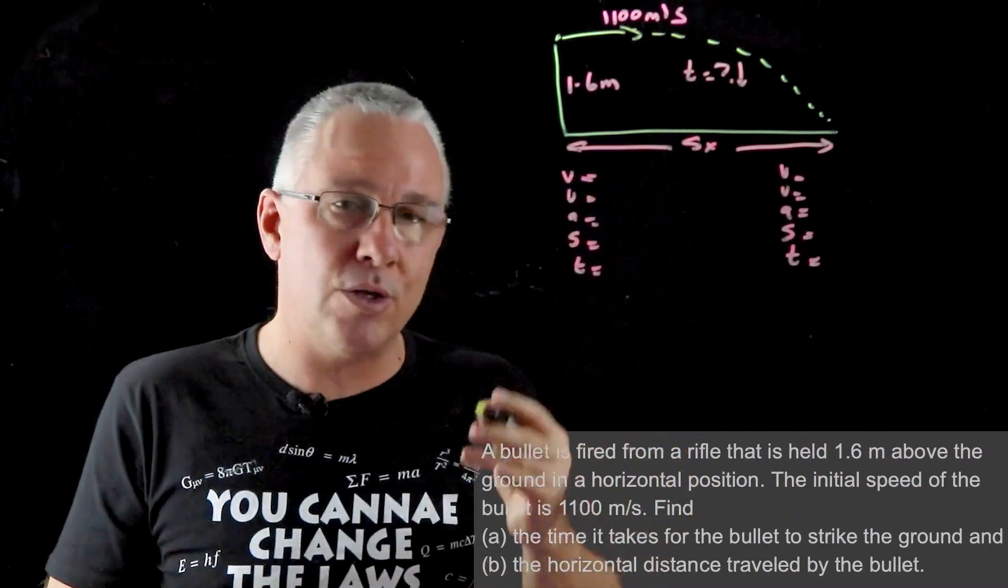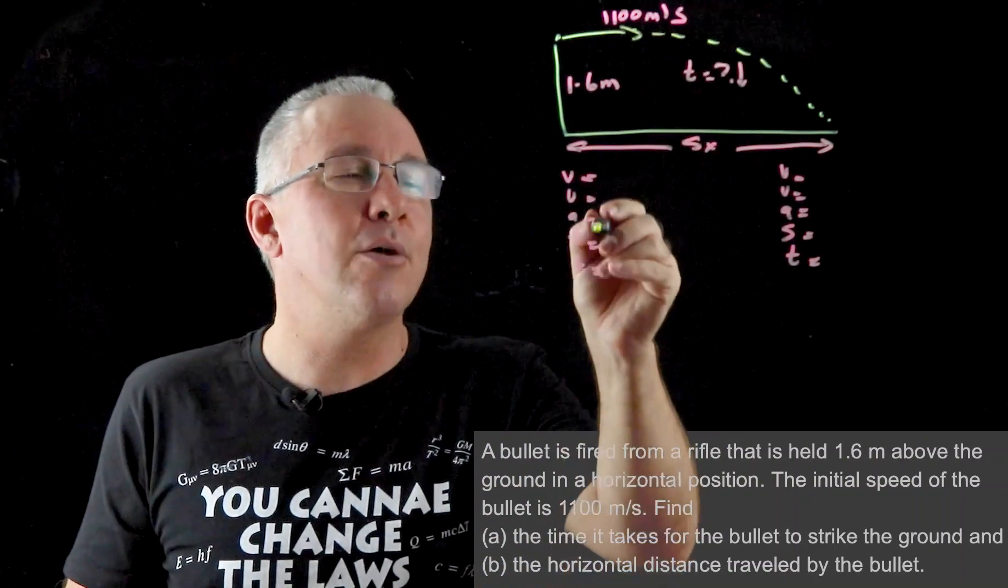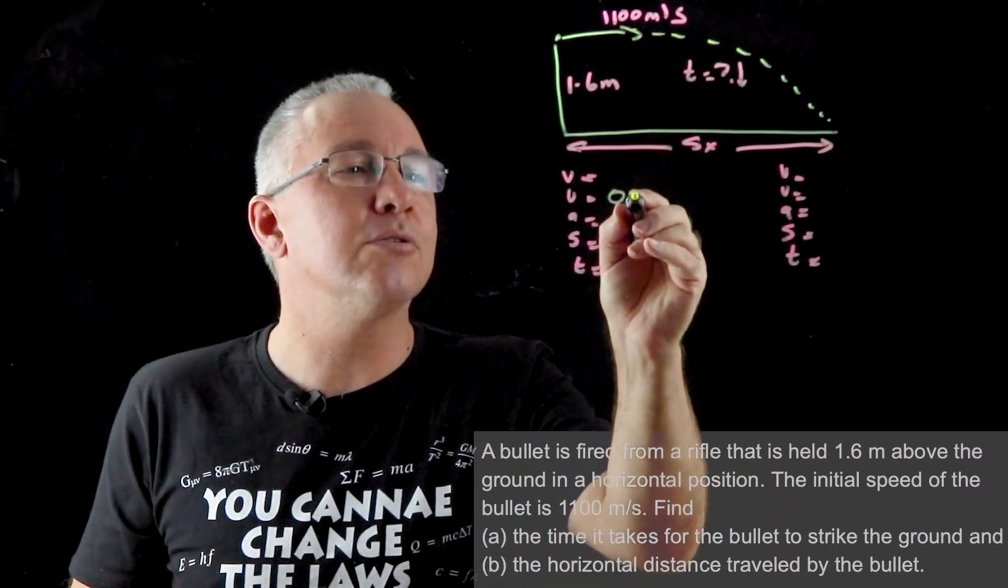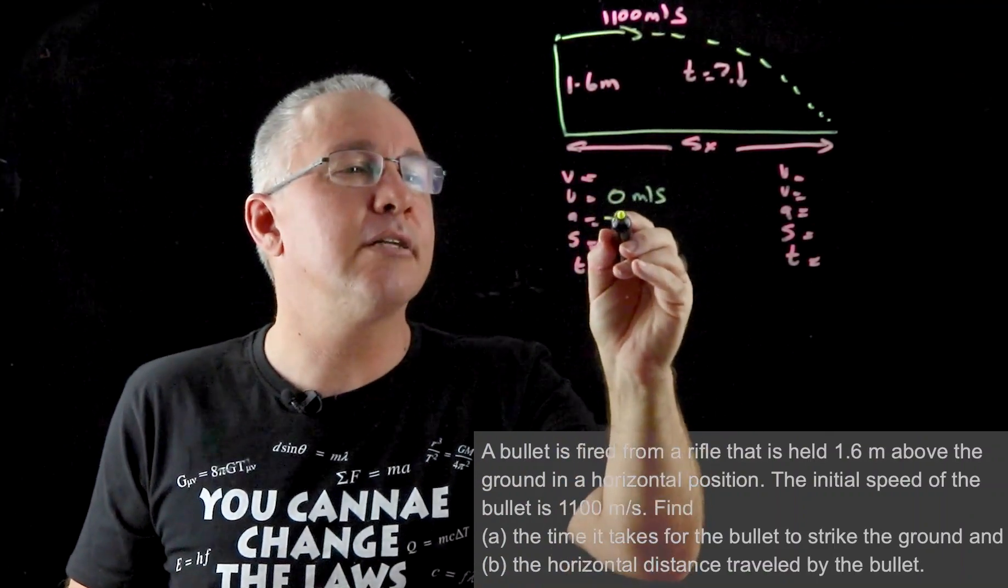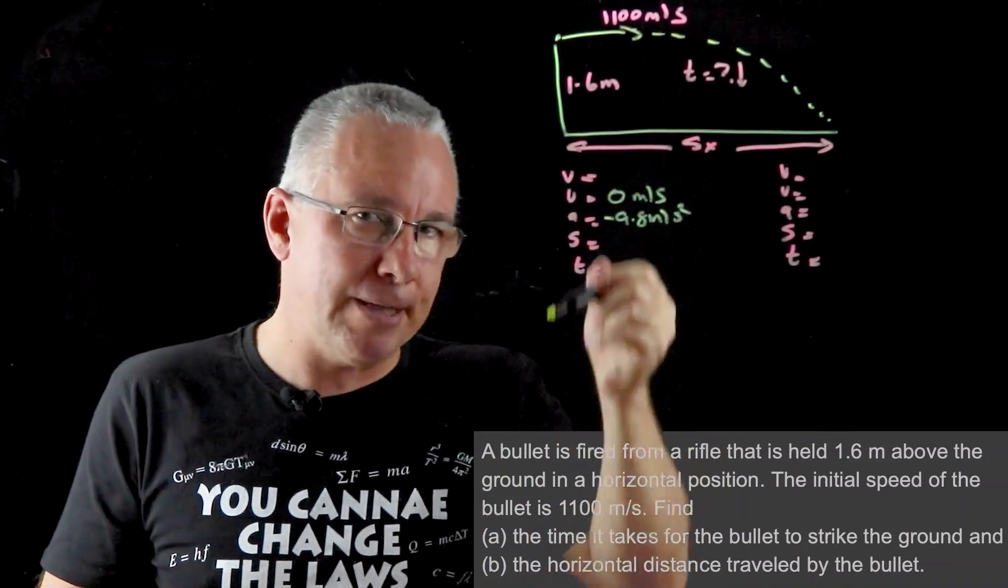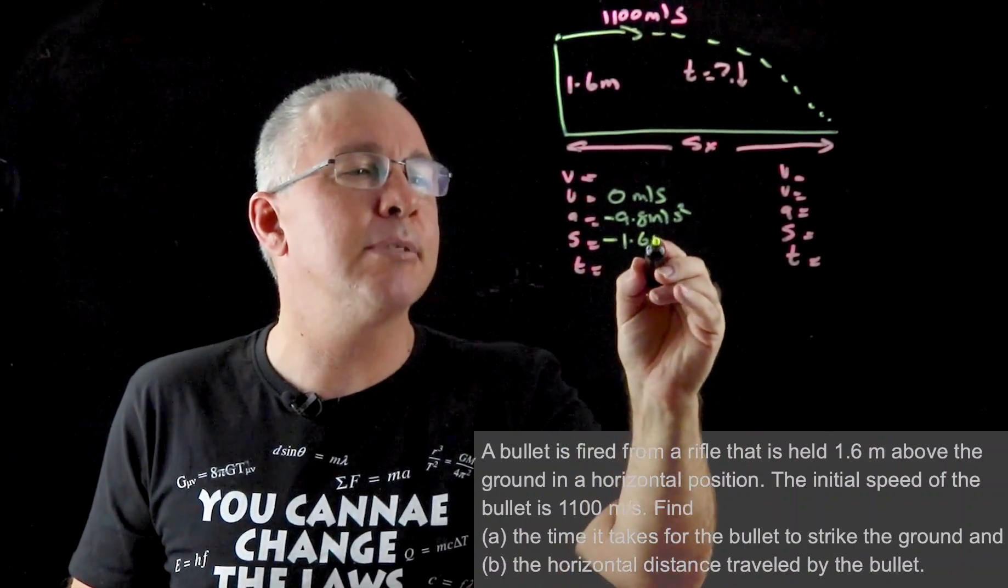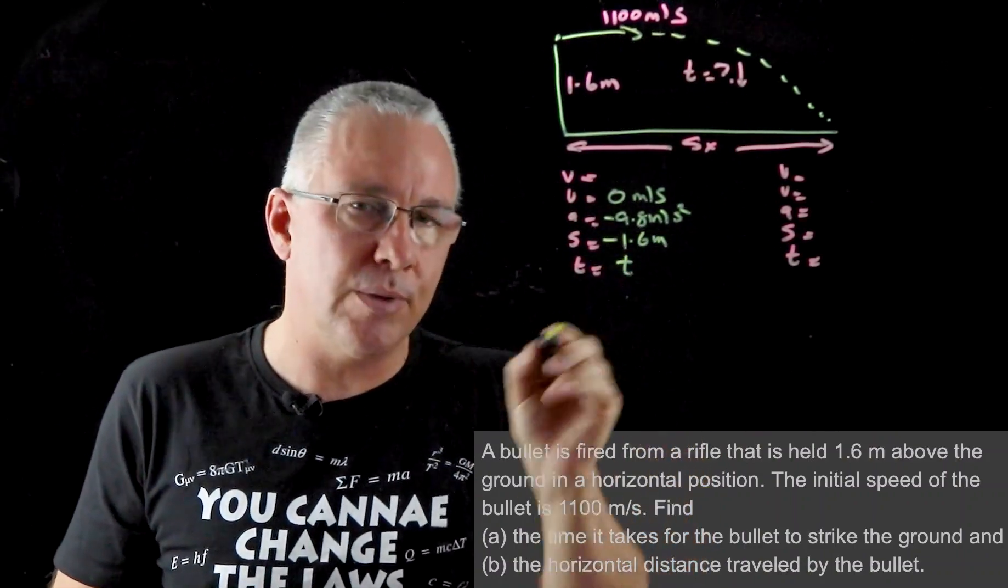Final velocity in this question we're not interested. Initial velocity we do. We know it's falling down so it's going to be equal to 0 meters per second. Our acceleration is negative 9.8 meters per second squared. Our displacement is 1.6 meters downwards, but it's in the downward direction so that's negative 1.6 meters, and time is what we're looking for so we write the letter.